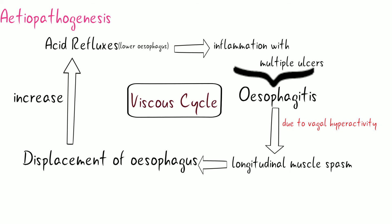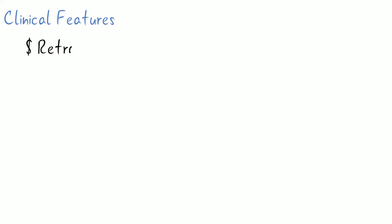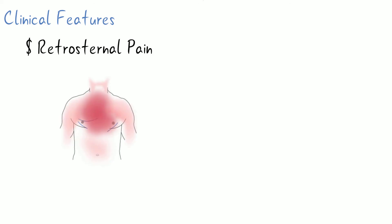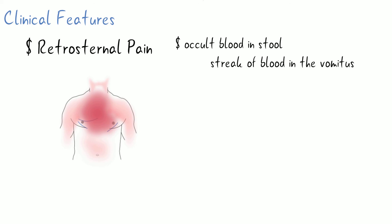The clinical features include retrosternal pain, burning in nature, which becomes worse in the lying position; sitting position may give relief. The condition can be confused with angina pectoris, but the pain is relieved on taking antacids. There may be acute bleeding, tarry stools, and streaks of blood in vomitus.